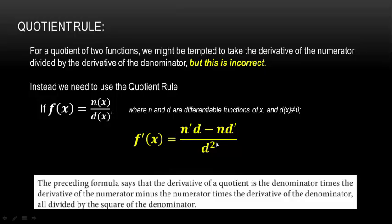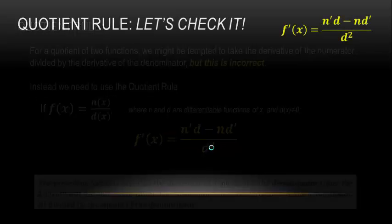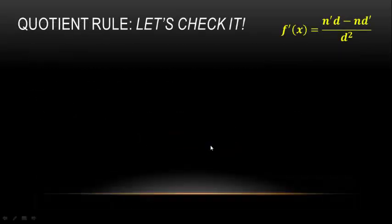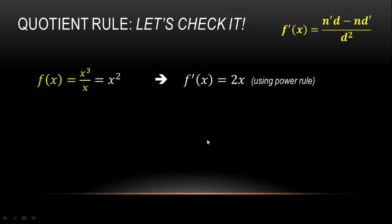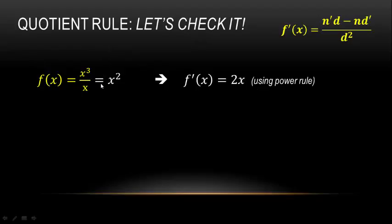A helpful shorthand: n'·d − n·d' over d². Let's verify it with a simple example. Consider x³/x — if we simplify the fraction first we get x², whose derivative is simply 2x. Now let's get the same result using the quotient rule to confirm it works.